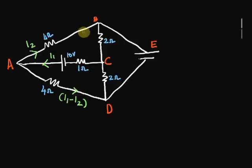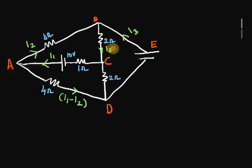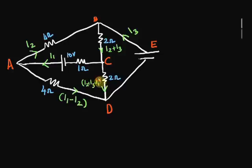We have another source of supply at E which also produces a current we'll call I3. At junction B, the two currents I2 and I3 combine to give us I2 plus I3. Going down to junction C, the current splits once again. Current flowing through CA is I1, so the current along CD will be I2 plus I3 minus I1. Current along DE is I3 as well, as the current through the whole section DEB will be the same.